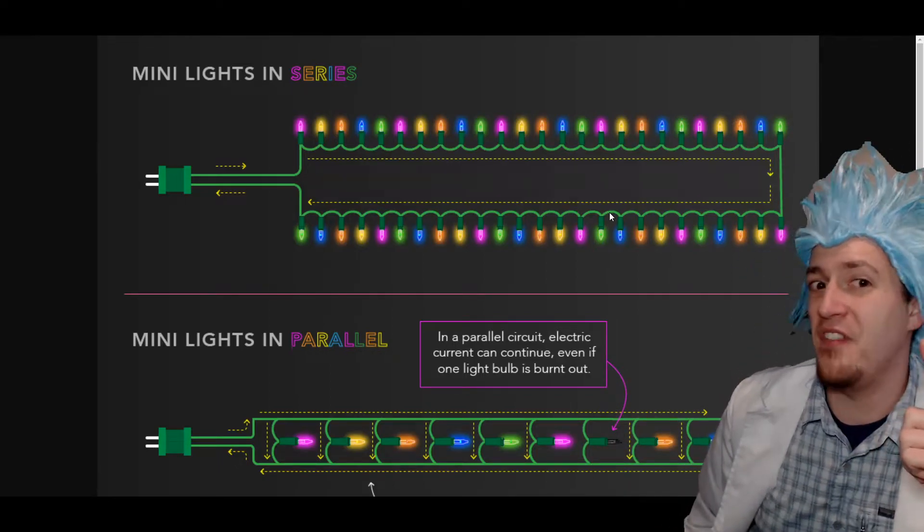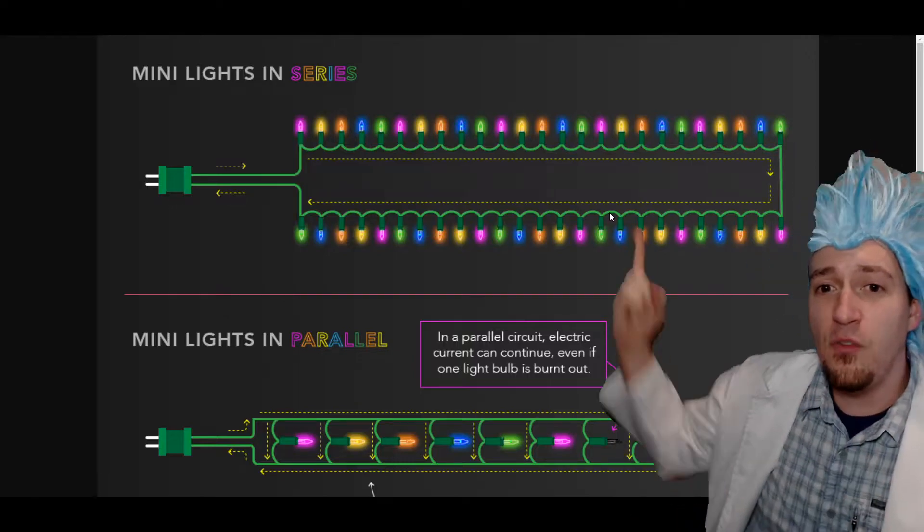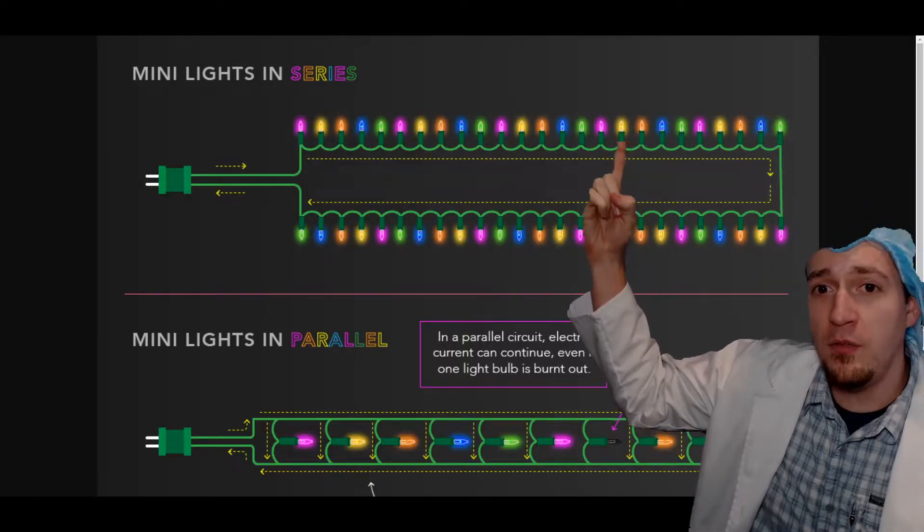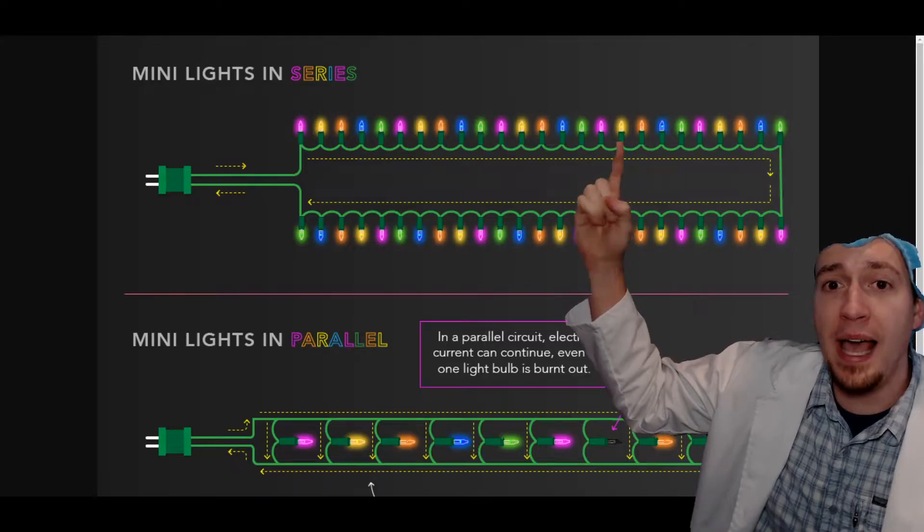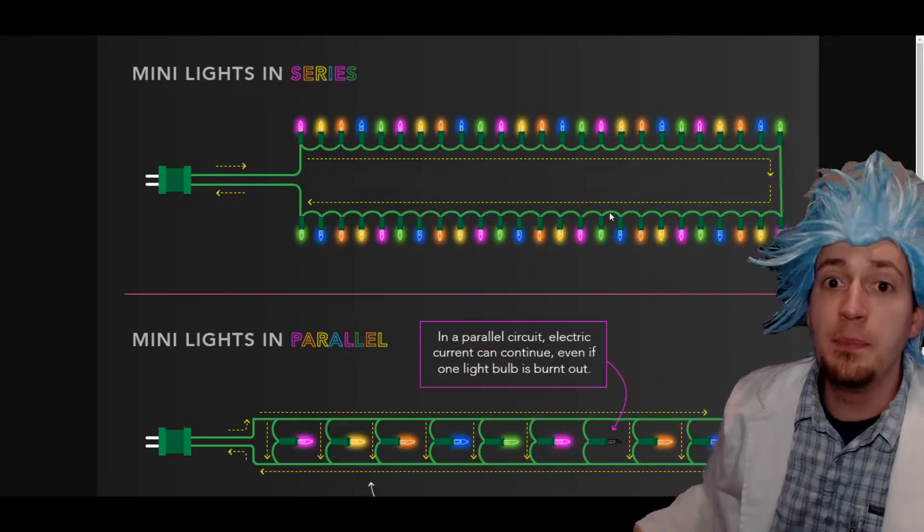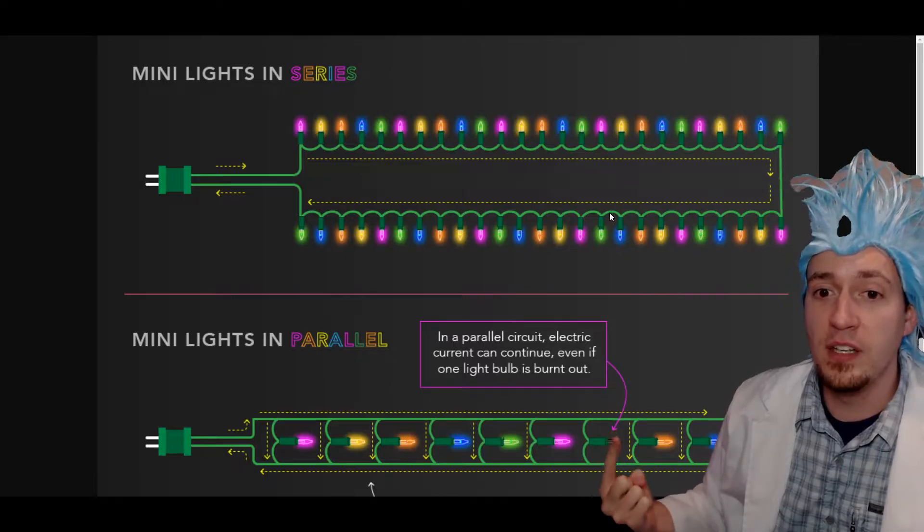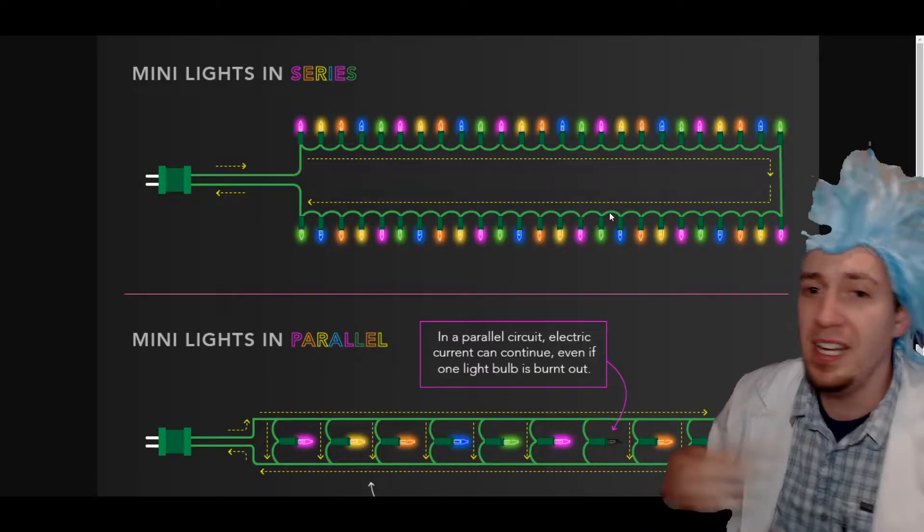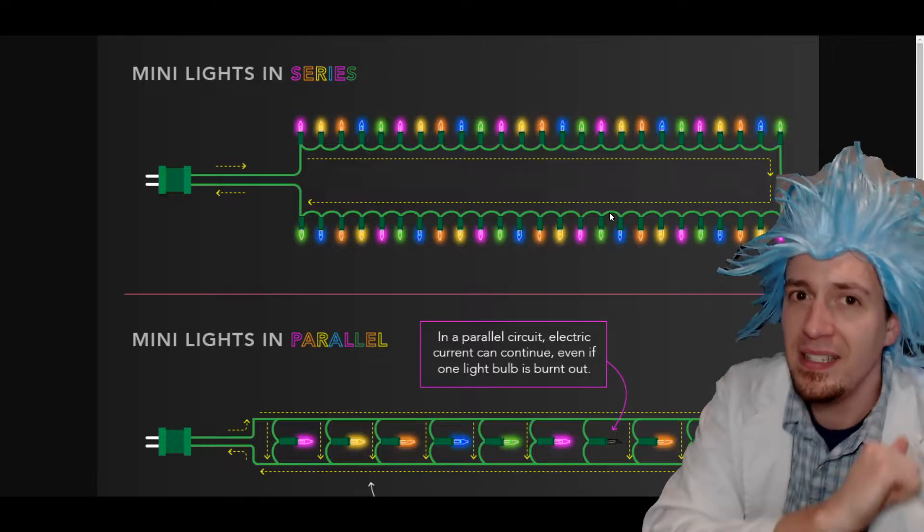The advantages and disadvantages are immense. The first disadvantage for series is that if one of these bulbs, if this one right there, that yellow one goes out, they all are broken out. All of them go off. In parallel, if one of these were to go off, you can see this one's off right here, the rest stay on. That's a huge advantage.